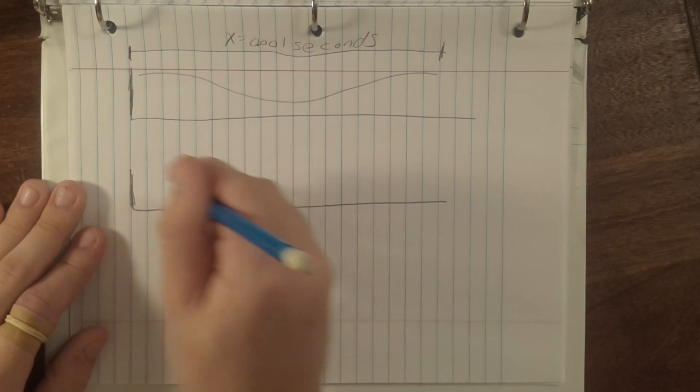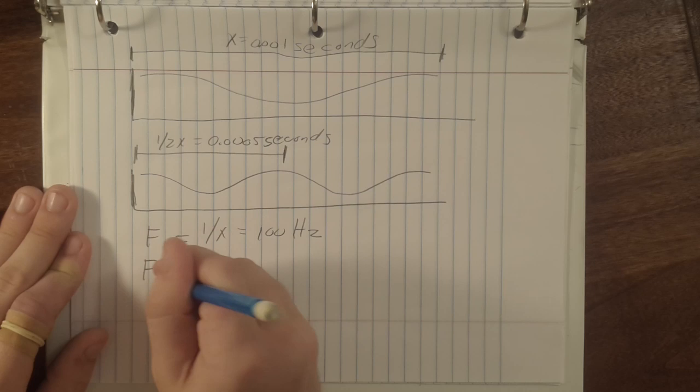We already know that the ratio 2 over 1 is 1200 cents, so an interval of that size could be referred to as justly tuned to a 2 over 1.